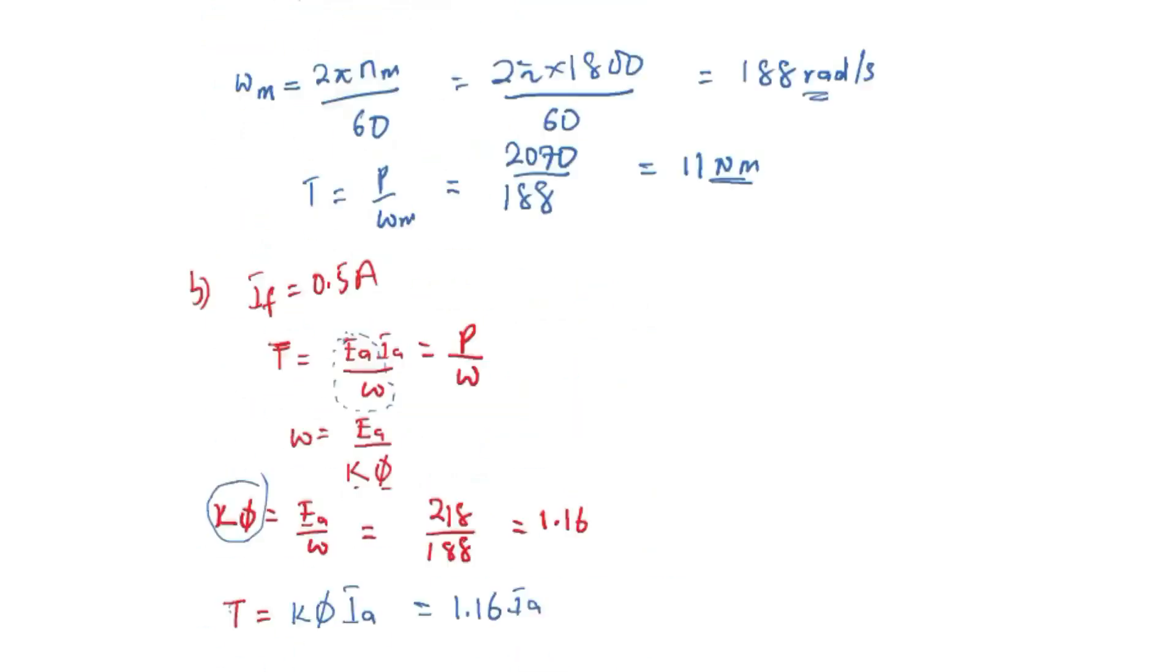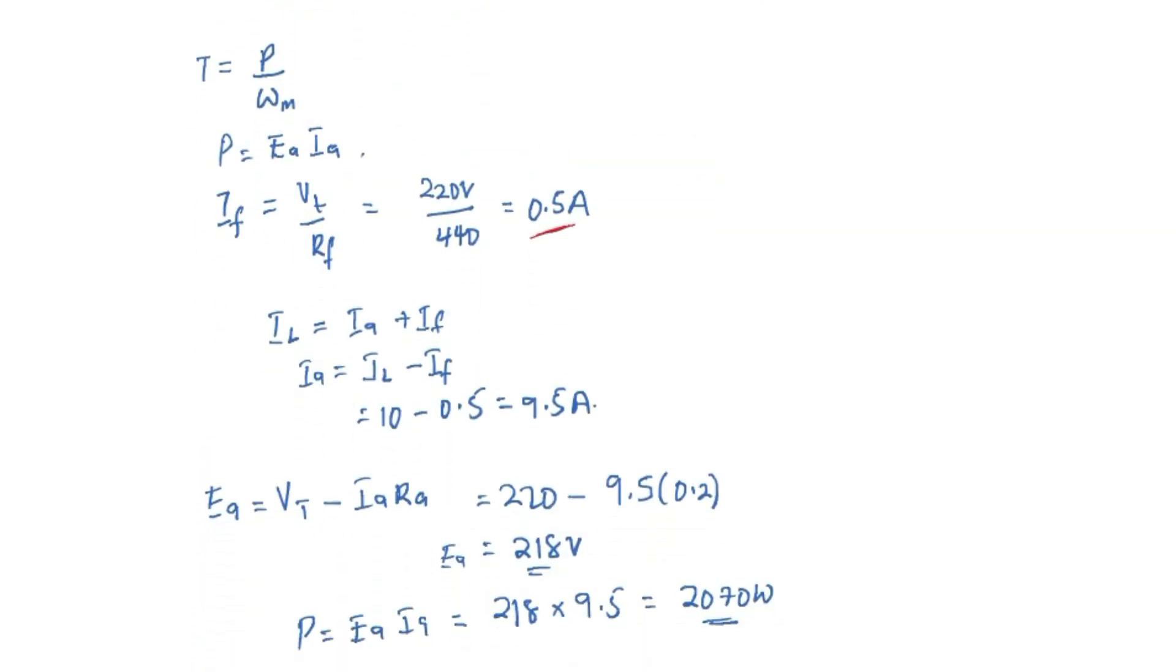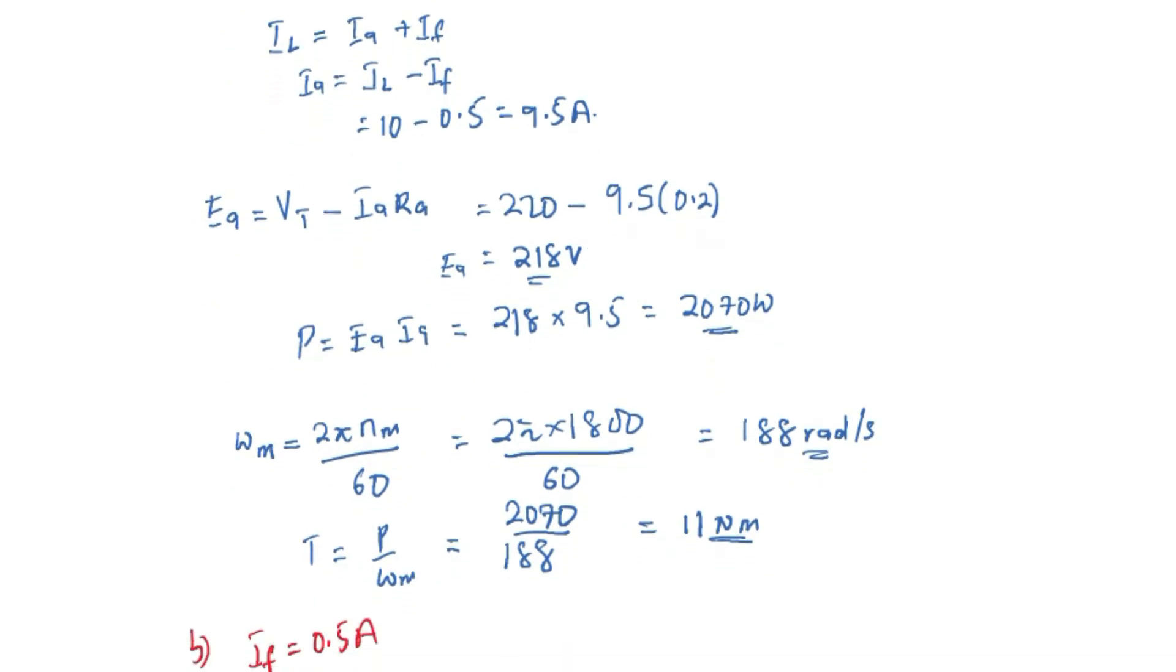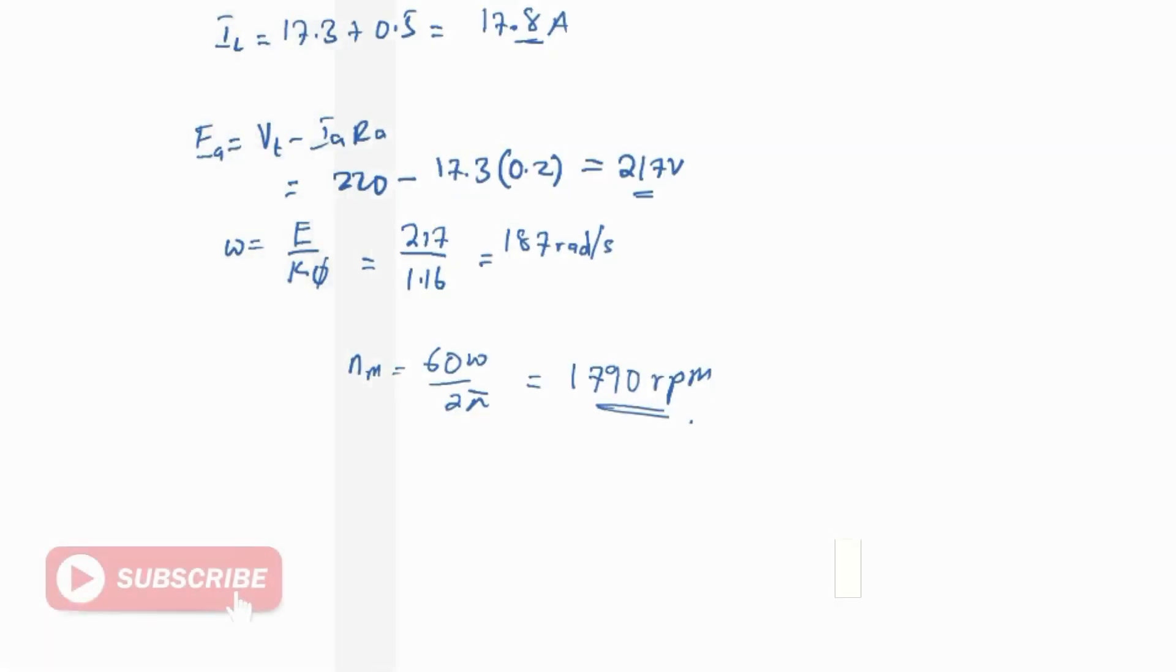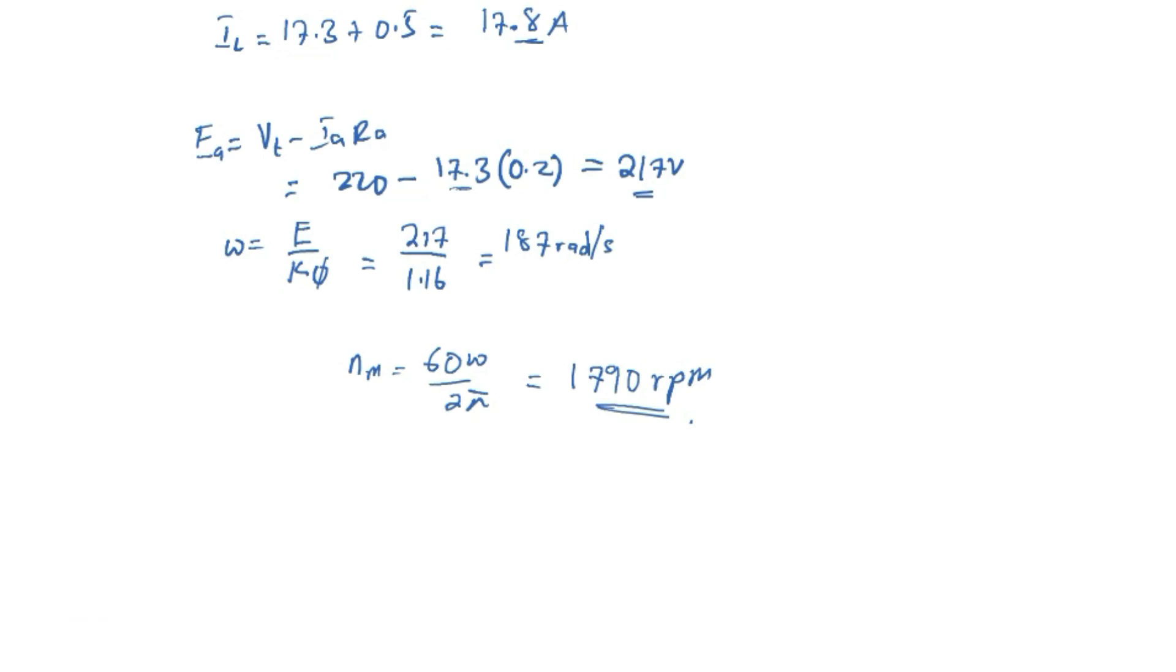So based on these values, we can draw a conclusion that this motor is a constant speed motor. Because here in the first part we are having an armature current of 9.5 Ampere, and in the second part of the question we are having 17.3 Ampere as armature current, but the speed doesn't change. So this is a characteristic of a shunt DC motor - it operates at constant speed.